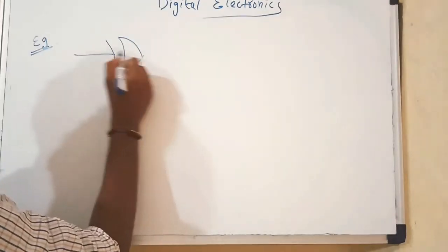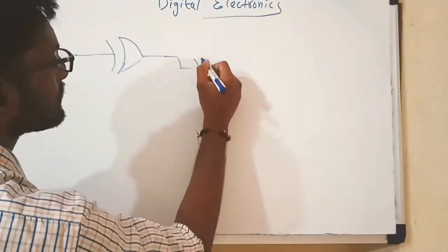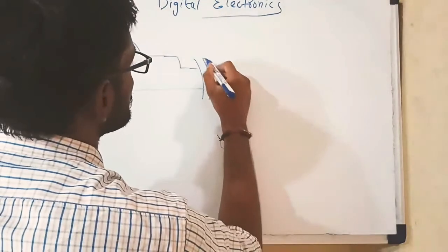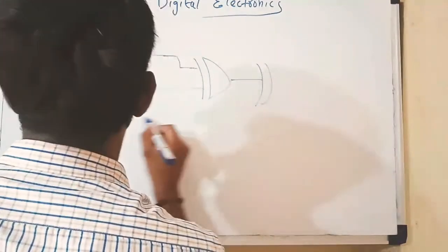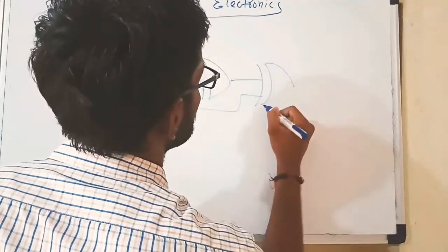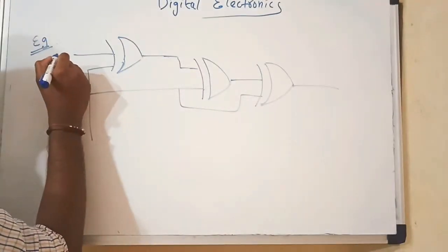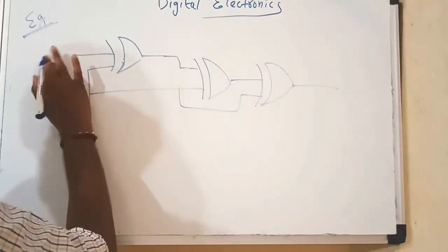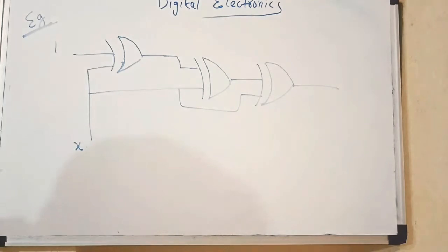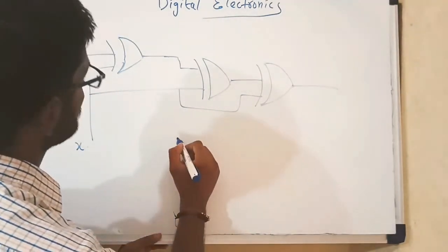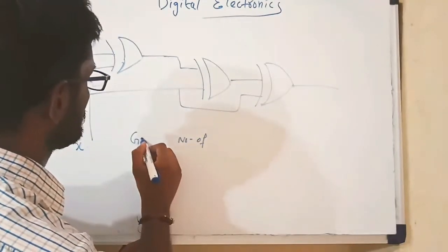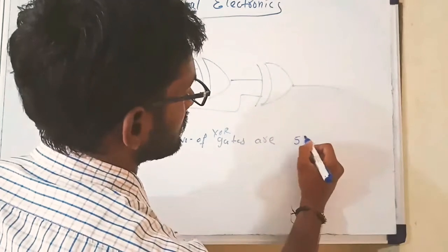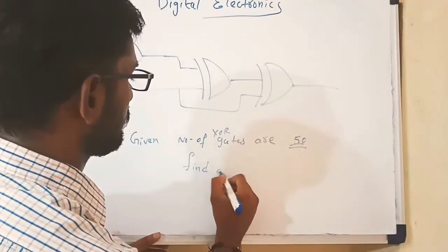This is an XOR gate. I am giving this XOR gate to the input of another XOR gate. These are the XOR gates and this is the input X. I am giving this as input as 1 and this as X. The number of gates given — nothing but XOR gates — are 50. Find the output.